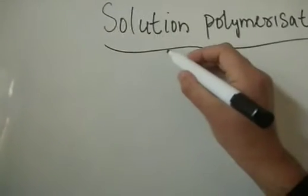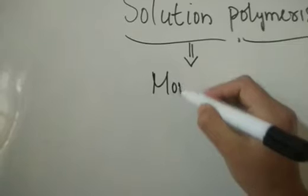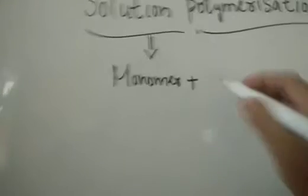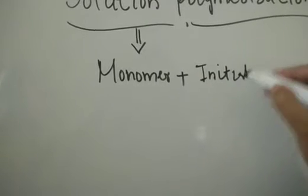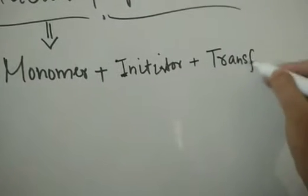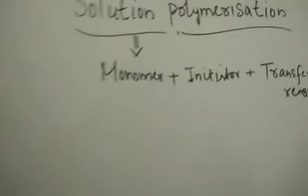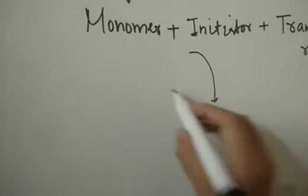In solution polymerization, we take the monomer and mix it with an initiator. If it is cationic polymerization or free radical polymerization, we use the initiator accordingly. We also add a chain transfer agent. We mix all three together and then dissolve them in a suitable solvent.